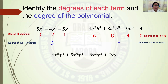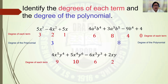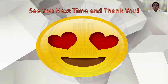Last example: 4x to the exponent of 5 y exponent 4 plus 5x raised to exponent 4 y raised to exponent 6 minus 6x cubed y cubed plus 2xy — the degrees of each term are: first term 9 (5 plus 4), second term 10 (4 plus 6), third term 6, and fourth term 2. So the degree of the polynomial is 10. Do you have questions? If there is none, then see you next time.